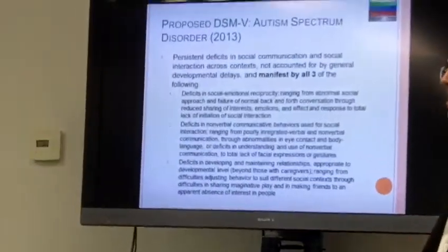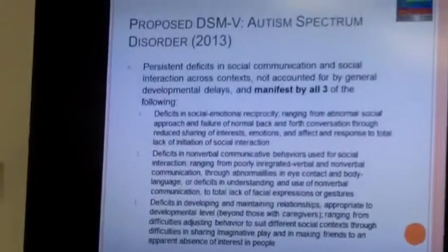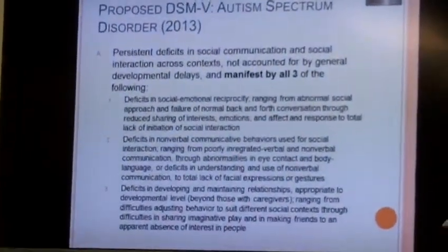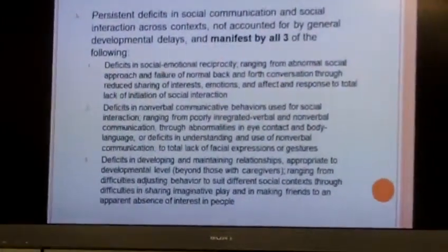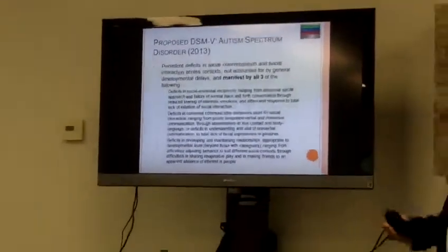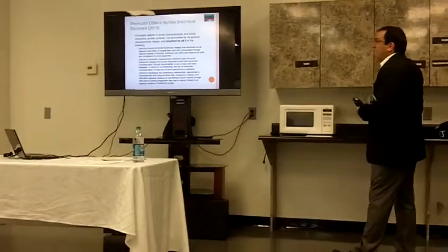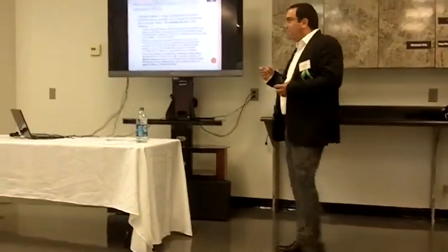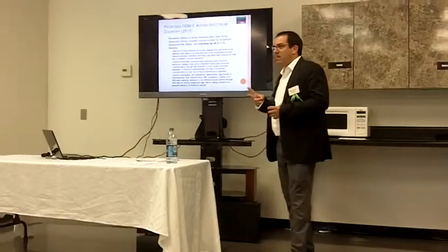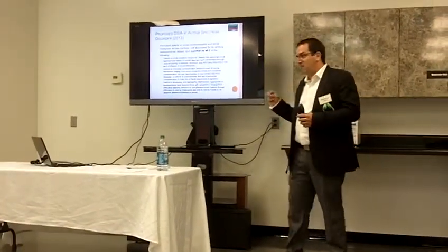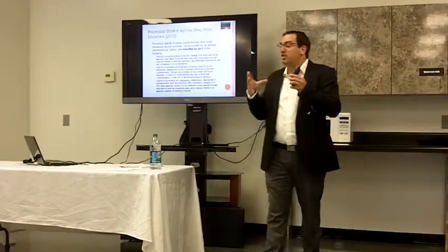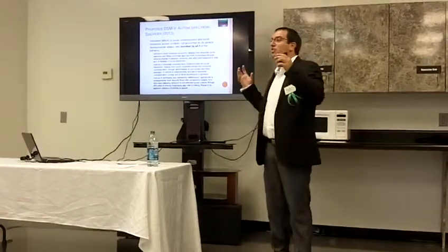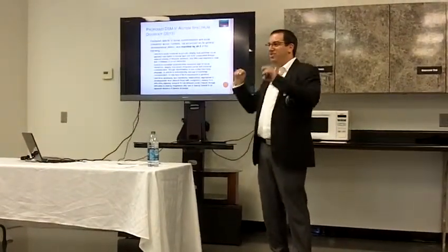This is the proposed criteria — you'll see how it's going to change. They do have public comments going on. If you don't like the criteria or have an issue with it, you can go to their website and comment, and the committee does look at those comments. That's why it's not out yet — it was supposed to come out this year but they pushed it back to 2013. Basically it's now called autism spectrum disorder, and there are only two areas being looked at. They have what's called social affect, where they've combined social and communication into one.